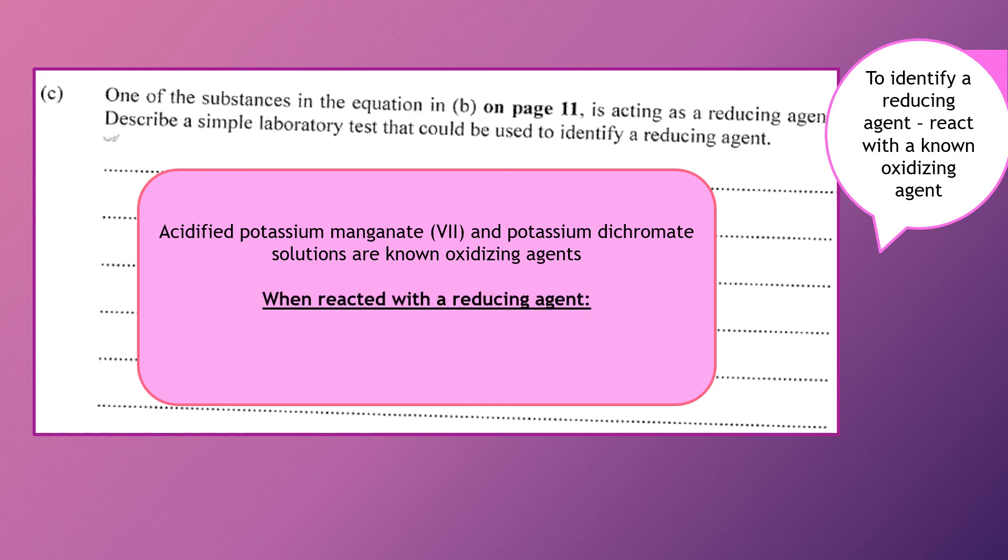And when they are reacted with a reducing agent, then we can look for some specific color changes. Like what? What are we expecting to see? So for the potassium manganate(VII), we know that that is usually what color? That's a purple solution. Definitely.